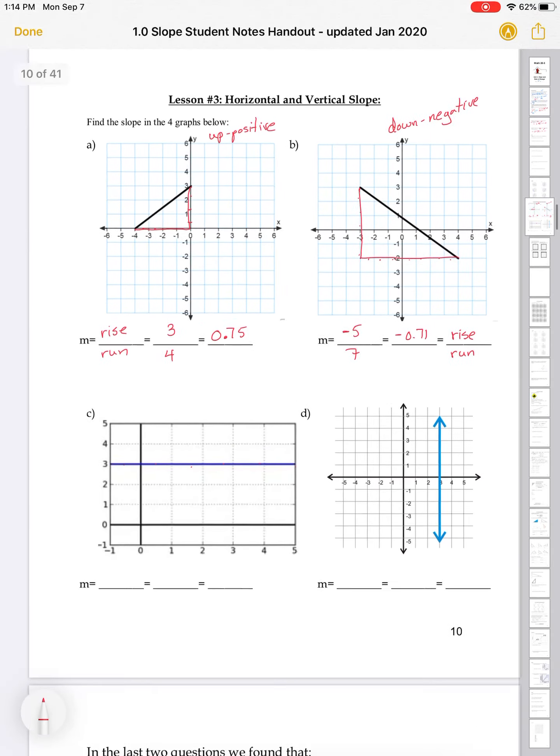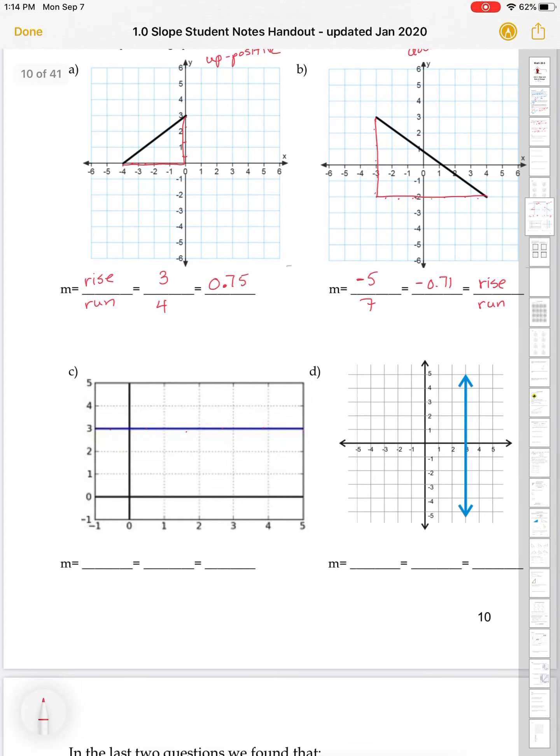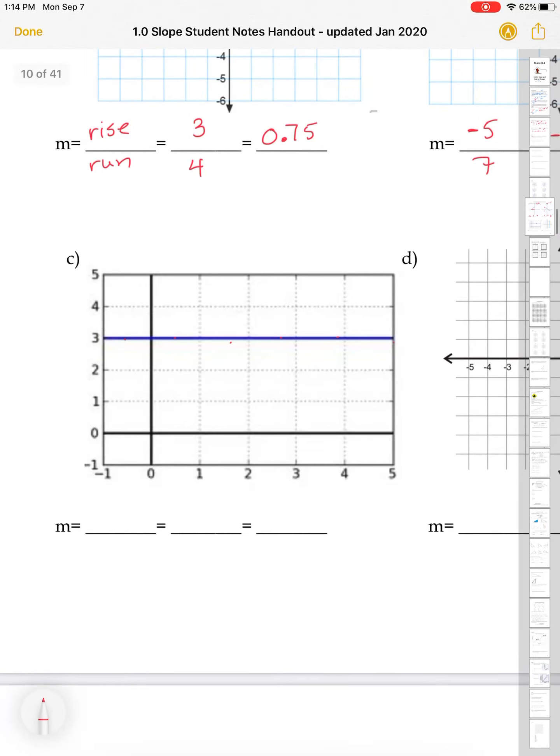So we have those two. Now we have two other graphs that look very different, because it's hard to really think about them in terms of our rise over run. This first one here, C, is a flat line. So it's not going up or down. So it is horizontal.